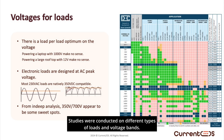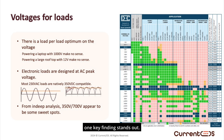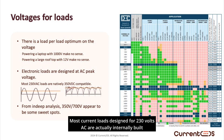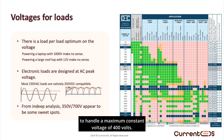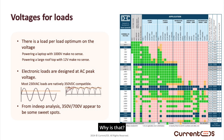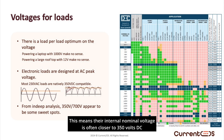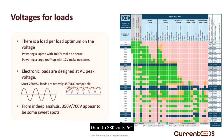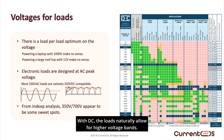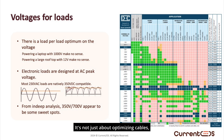Studies were conducted on different types of loads and voltage bands, and one key finding stands out. Most current loads designed for 230 volts AC are actually internally built to handle a maximum constant voltage of 400 volts. As a result, they perform very well around 350 volts DC. Many of today's AC loads include internal electronics, and the first thing those electronics do is convert AC to DC. This means their internal nominal voltage is often closer to 350 volts DC than to 230 volts AC. With DC, the loads naturally allow for higher voltage bands — it's not just about optimizing cables, it's the way many existing products are designed.